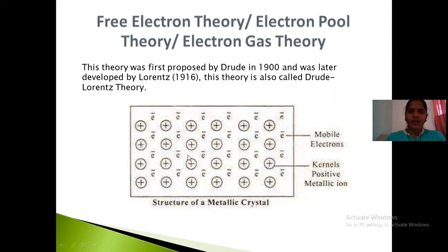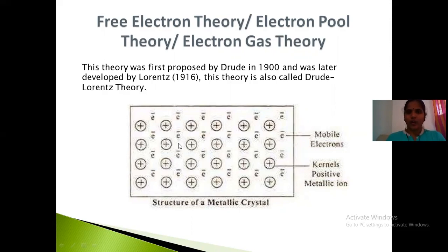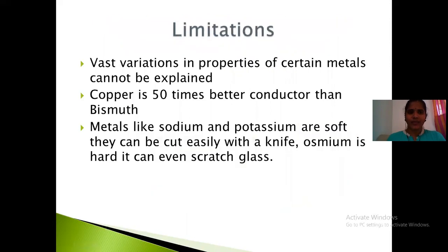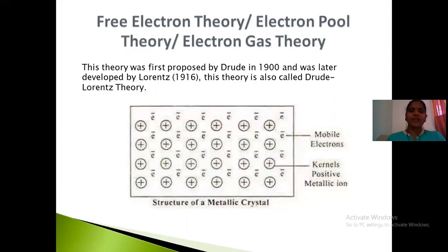Each positive ion belongs to a number of electrons and each electron belongs to a number of positive kernels. The force that binds a metal atom to the number of electrons within a sphere of influence is what is known as the metallic bond, according to this theory.